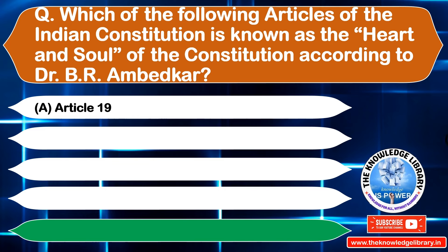The next question is: which article provides for the abolishing of untouchability? Option A: Article 14, Option B: Article 17, Option C: Article 18, Option D: Article 19. The correct answer is Option B: Article 17.